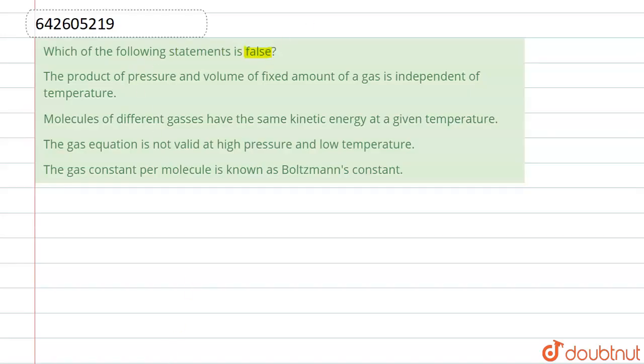Which of the following statement is false? Let us start with the first statement. The first statement says the product of pressure and volume of a fixed amount of gas is independent of temperature.